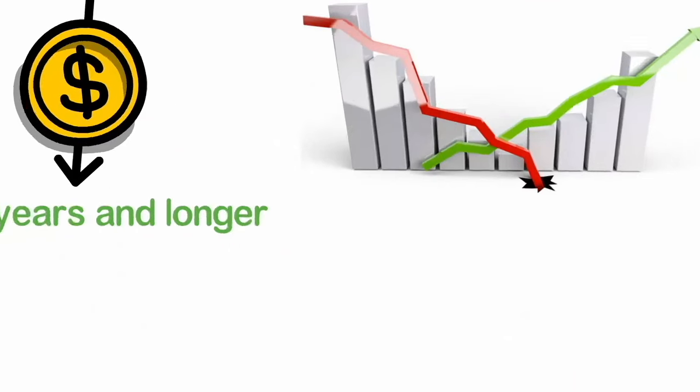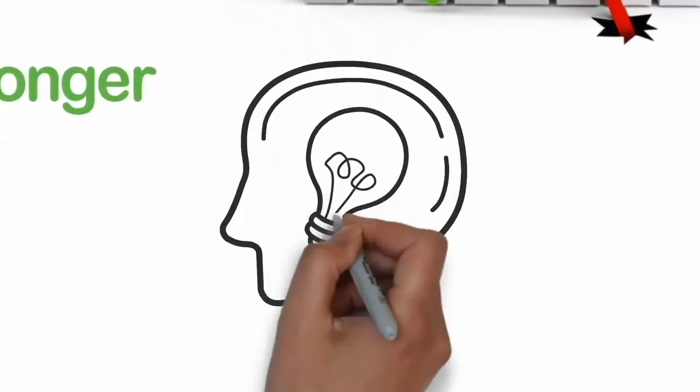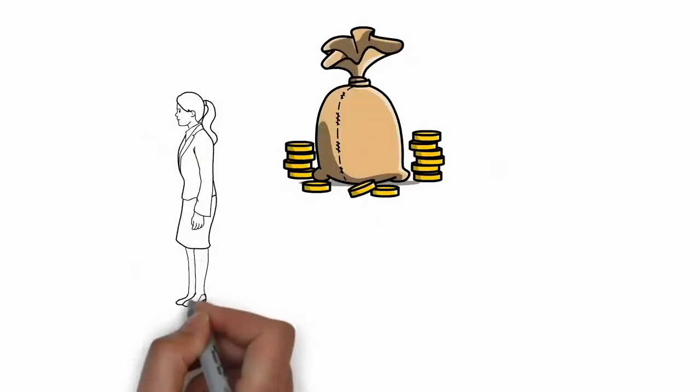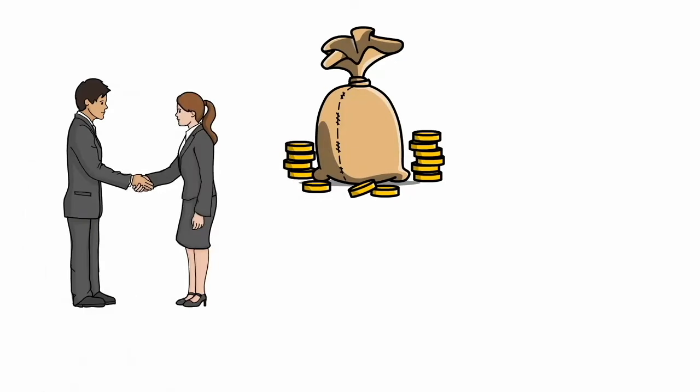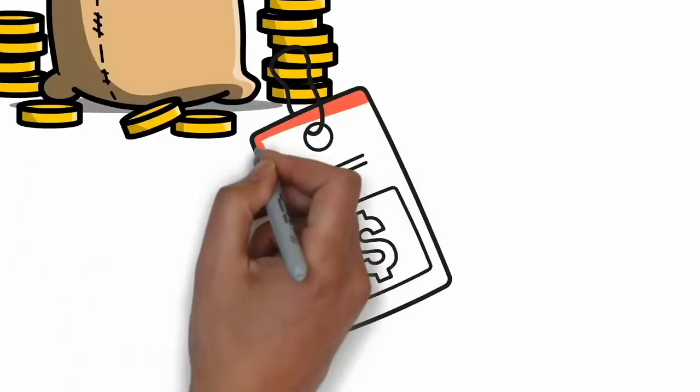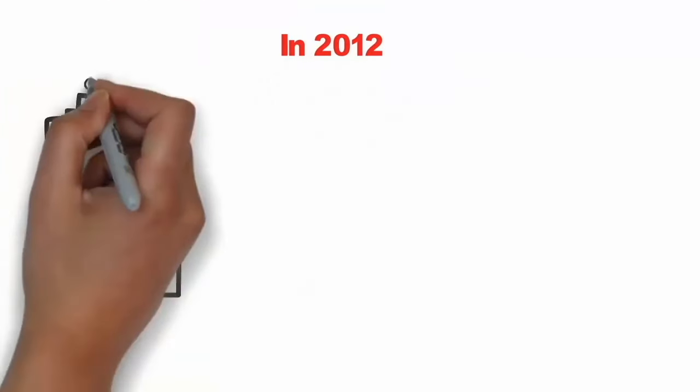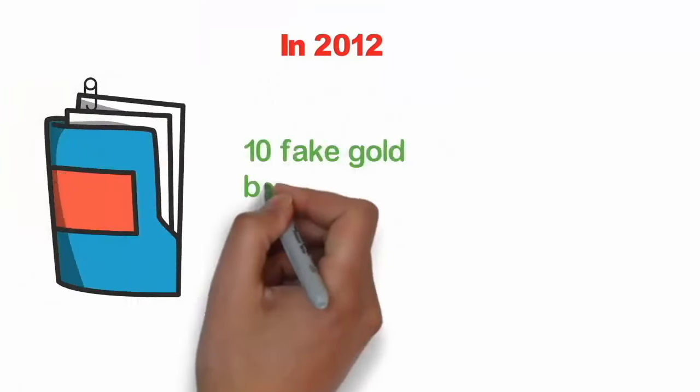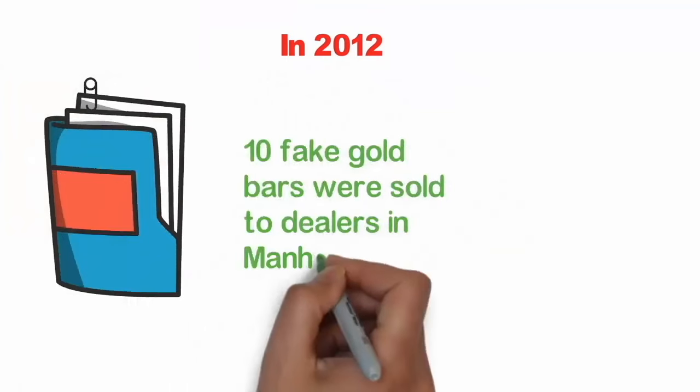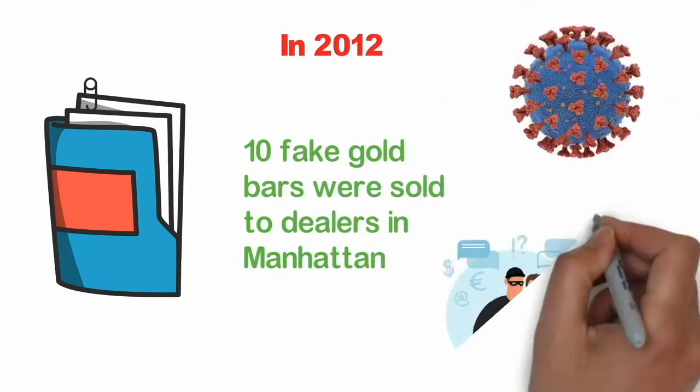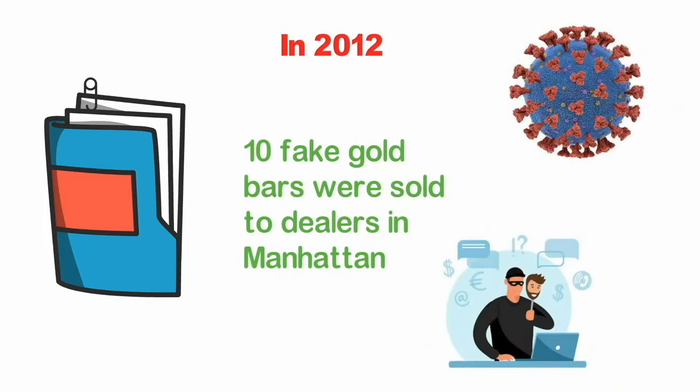There are some other factors to consider when deciding if you should make an investment in gold bullion. First up, gold is an unregulated commodity traded through a network of mostly unregulated dealers. This places any purchase of physical gold at risk for security. In 2012, the New York Post reported that at least 10 fake gold bars were sold to dealers in Manhattan.